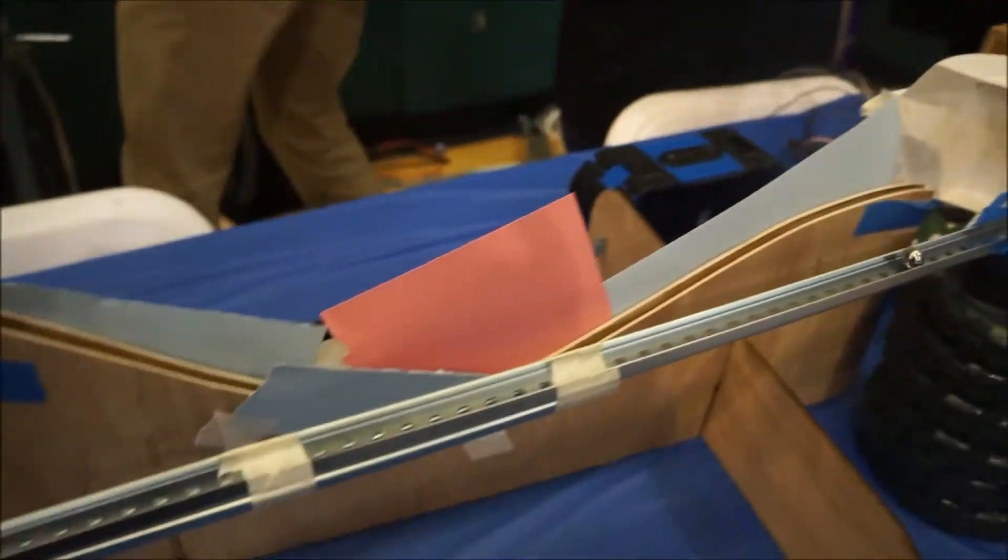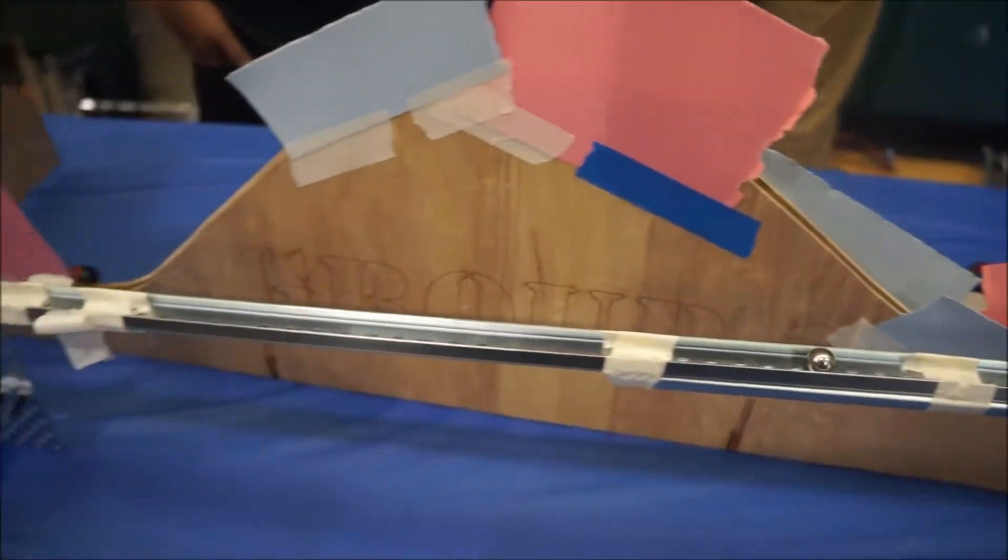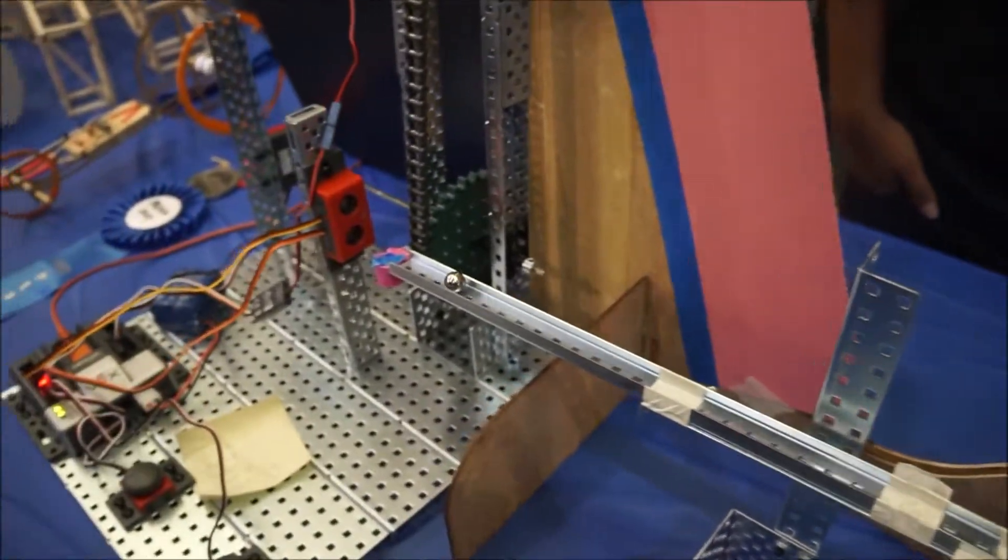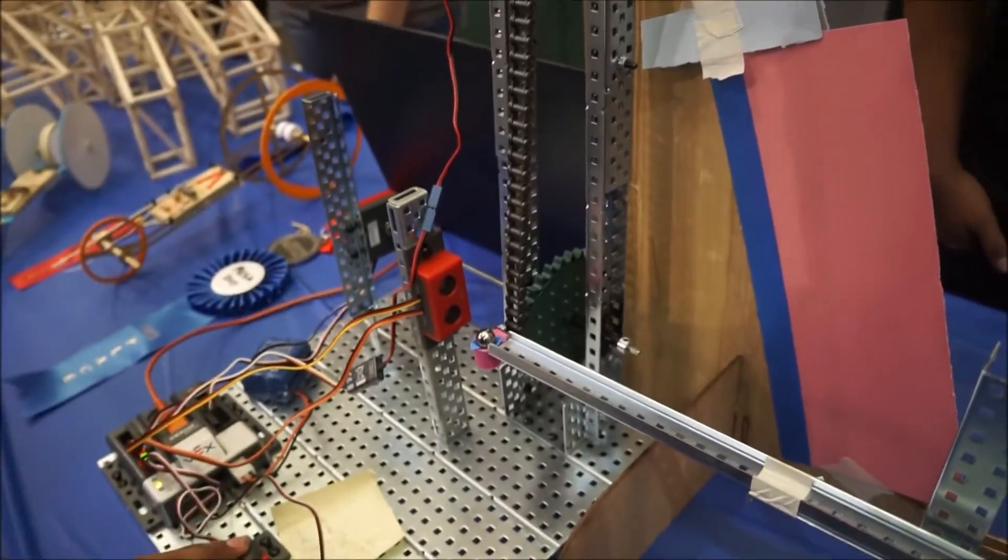For physics, we had to understand exactly how fast it was going to be moving throughout the track. And for Principles of Engineering, we had to put it all together and also code this using sensors. Right, right, right.